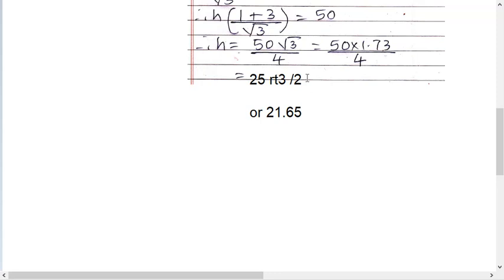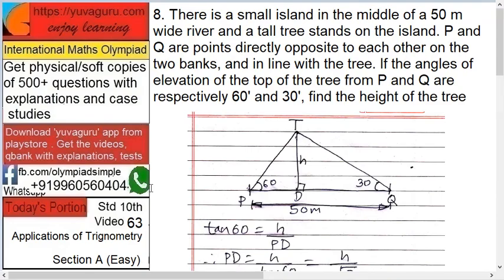But PD plus DQ, that is the river, equals 50. Therefore h upon root 3 plus h root 3 equals 50. So root 3 into root 3, take h common.